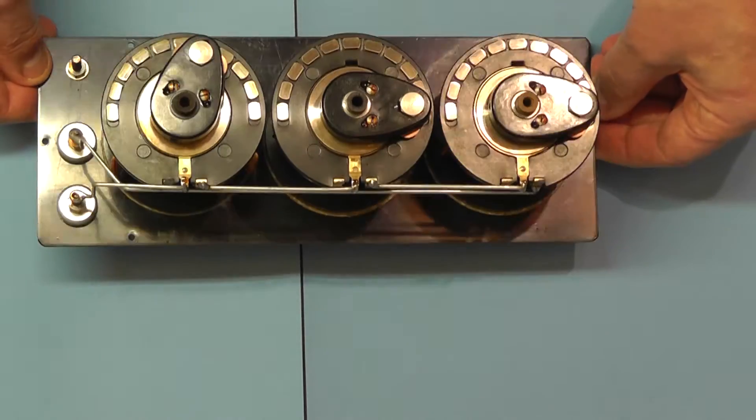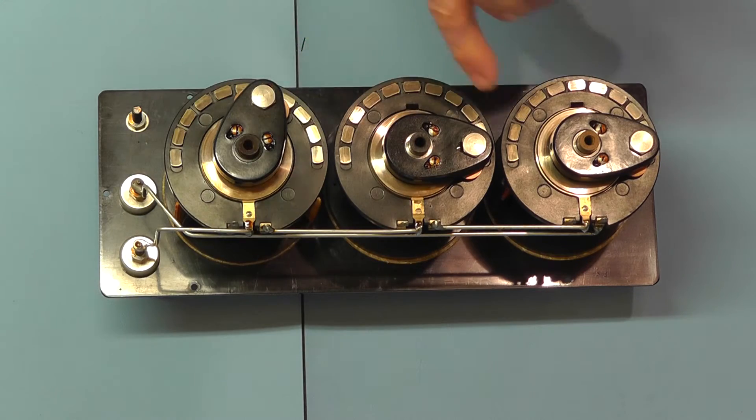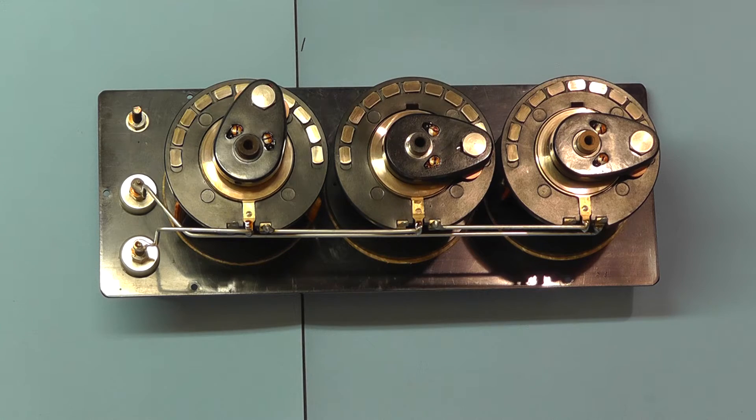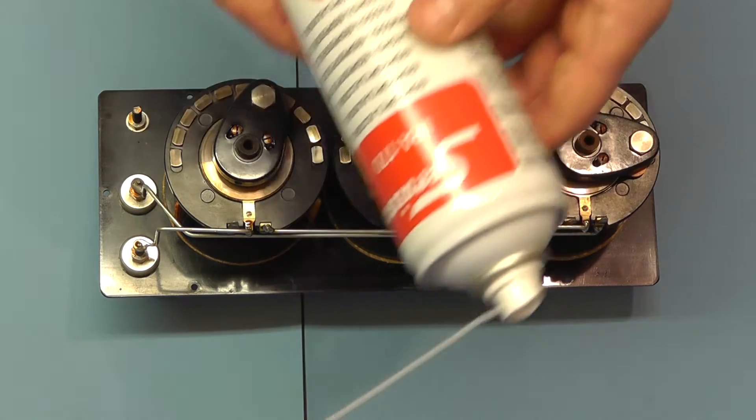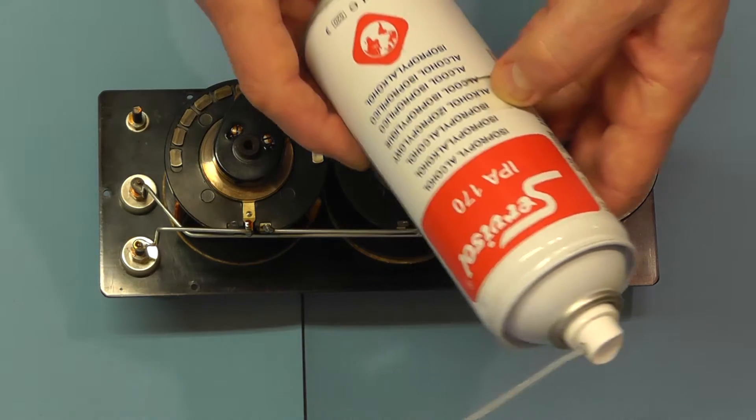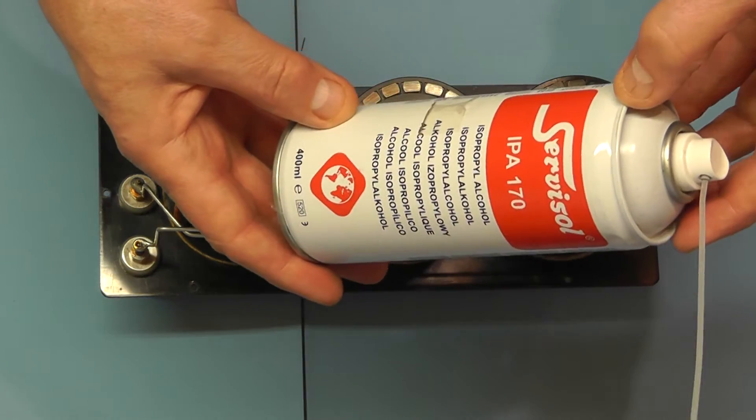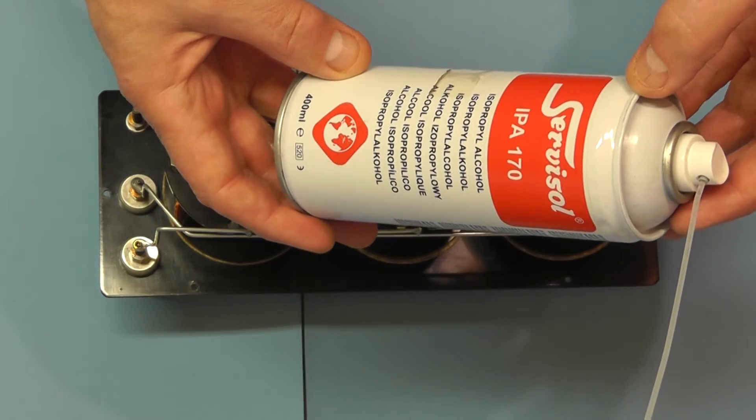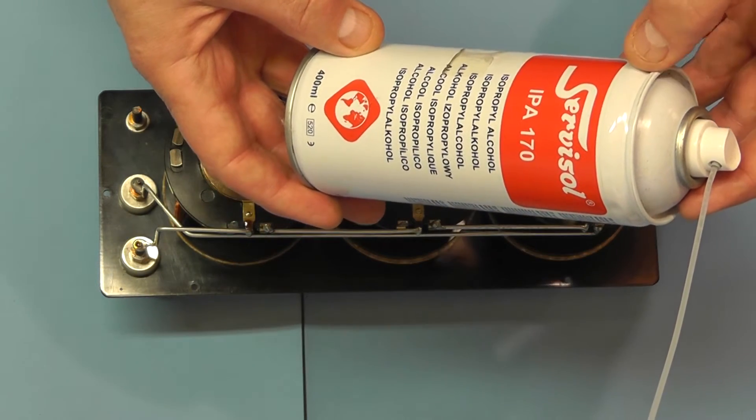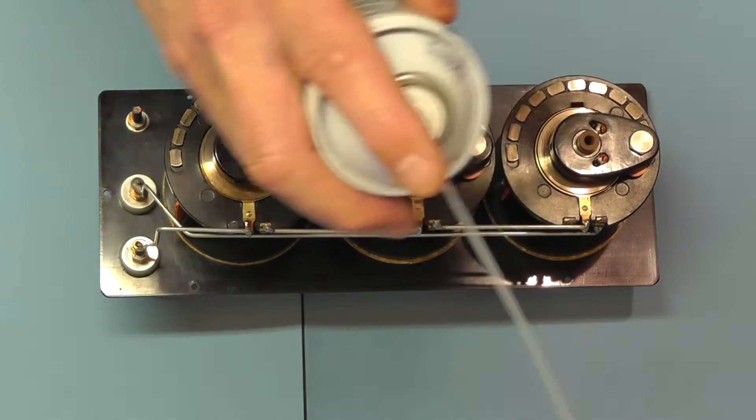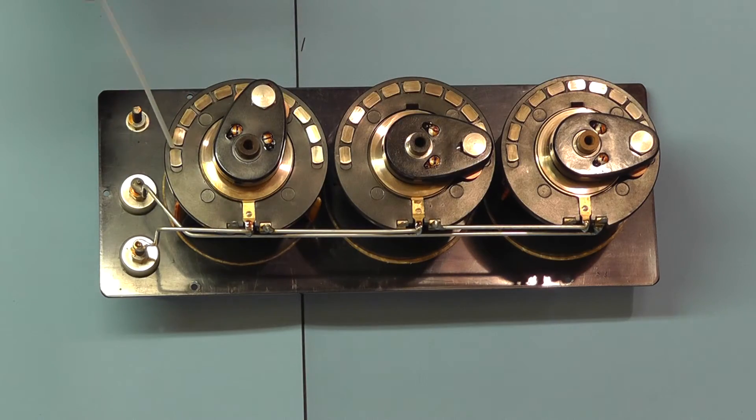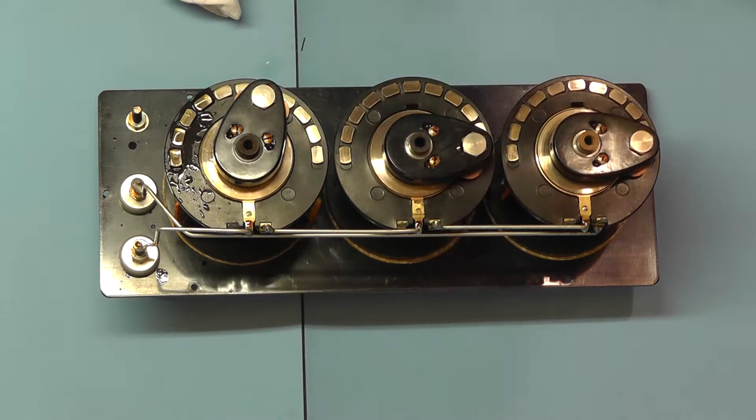The contacts look a little bit dirty so I'm just going to clean the contacts here and then just check the switch mechanism. To do that I'm going to use some isopropyl alcohol. And this is ideal for cleaning switches. It doesn't leave any grease film afterwards when it evaporates.